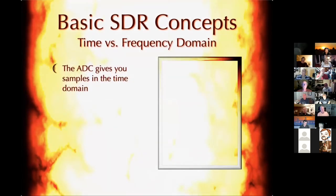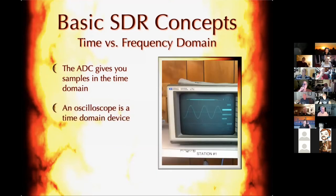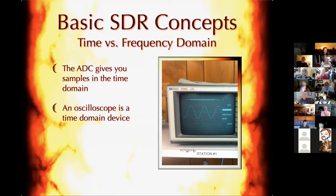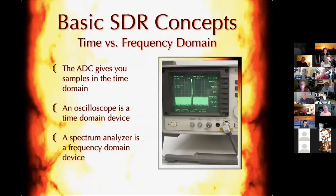Another way to think about time versus frequency domain: the ADC gives you samples in the time domain. An oscilloscope is a time domain device — it graphs the voltage of the signal versus the time of the sweep. A spectrum analyzer is a frequency domain device — you look at frequency on the x-axis and magnitude or power on the y-axis. You can put a splitter on your signal, put one into the oscilloscope and one into the spectrum analyzer, and look at the same stuff in different ways. That becomes really important for what we do with SDR.